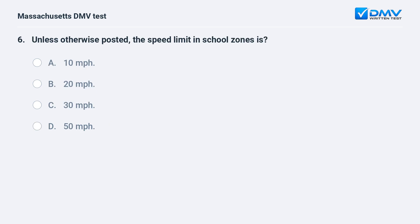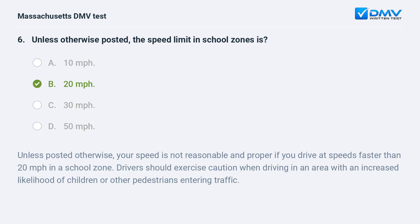Unless otherwise posted, the speed limit in school zones is: a. 10 miles per hour. b. 20 miles per hour. c. 30 miles per hour. d. 50 miles per hour. Answer: b. 20 miles per hour. Unless posted otherwise, your speed is not reasonable and proper if you drive faster than 20 miles per hour in a school zone. Drivers should exercise caution in areas with an increased likelihood of children or other pedestrians entering traffic.